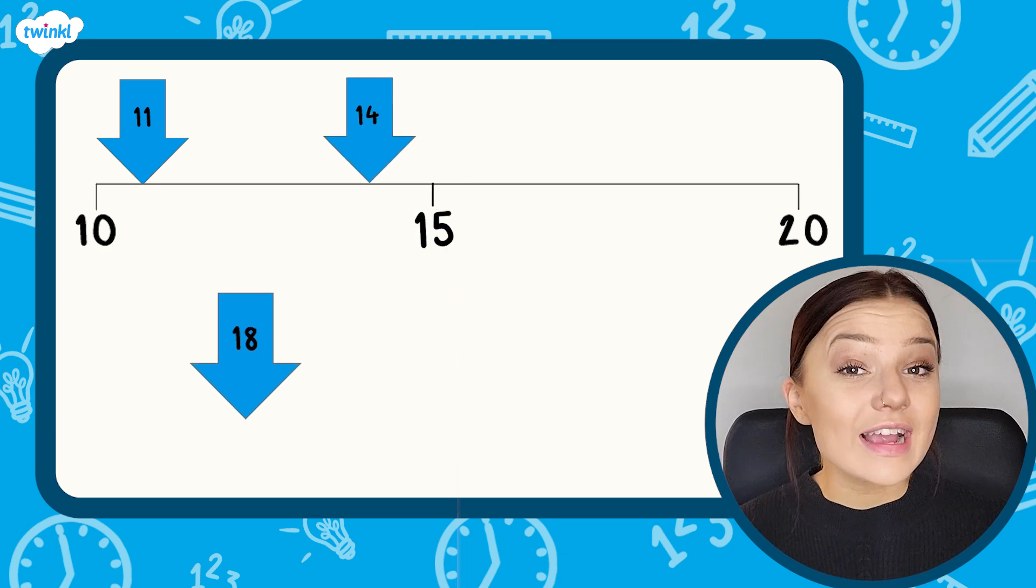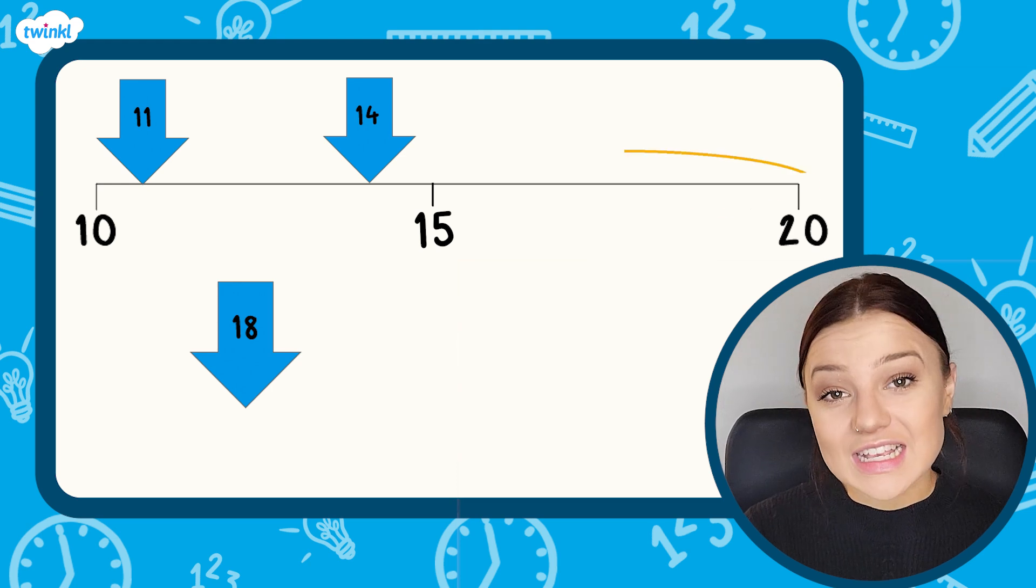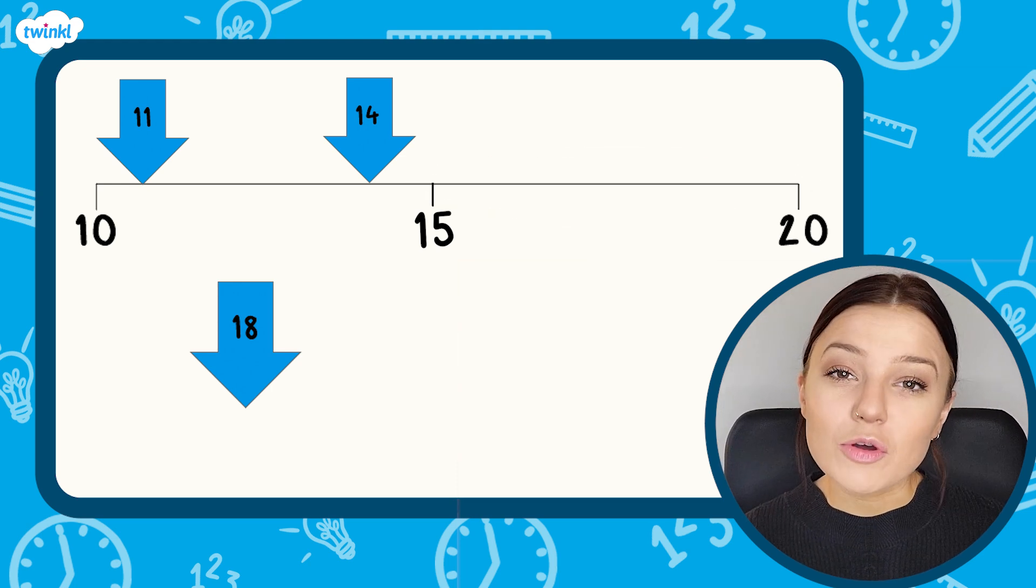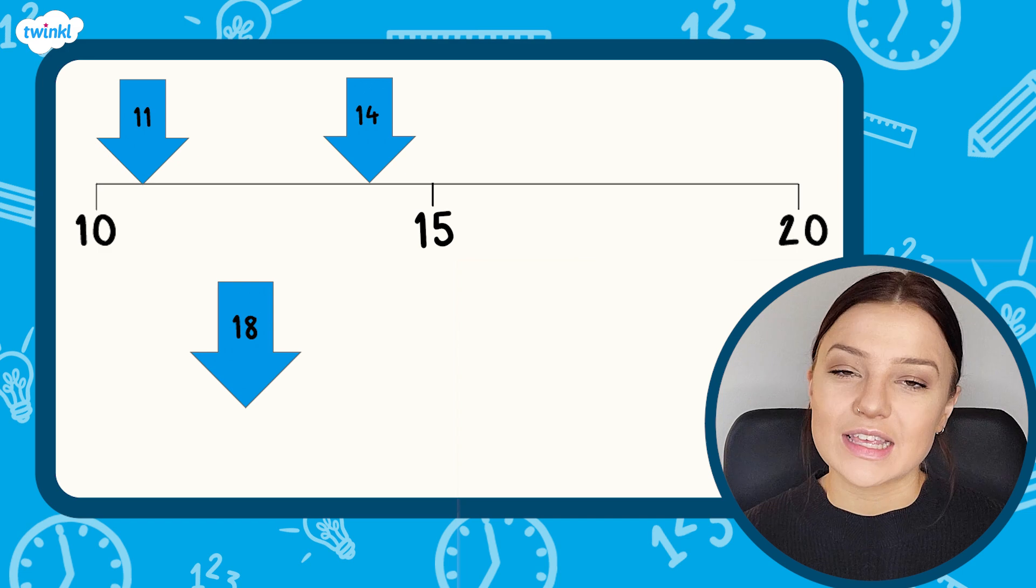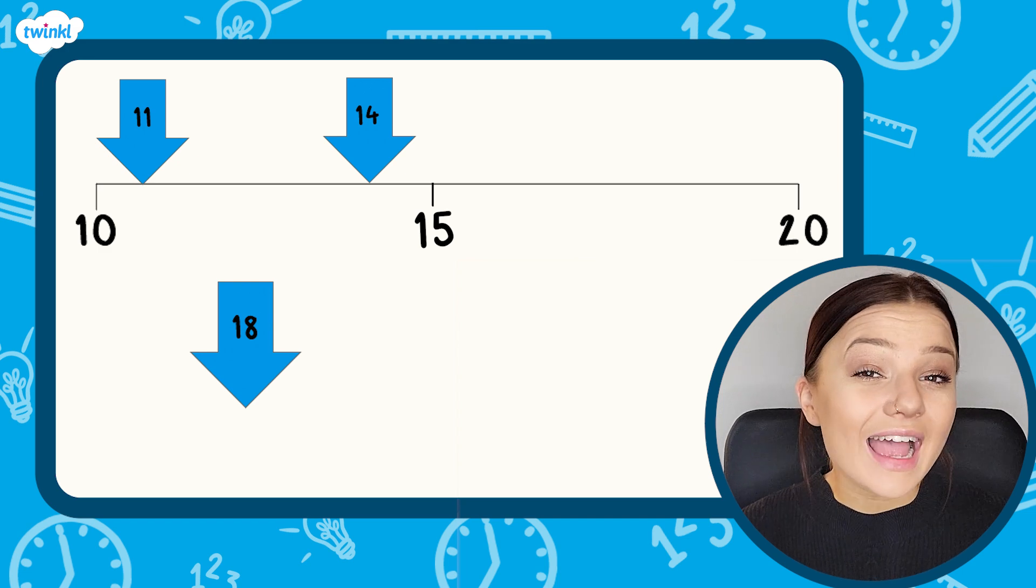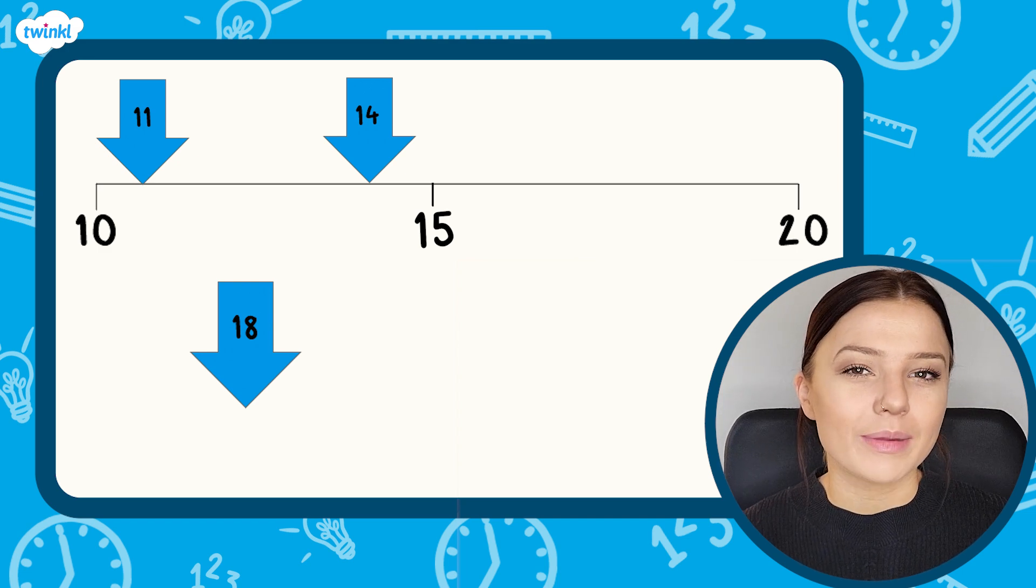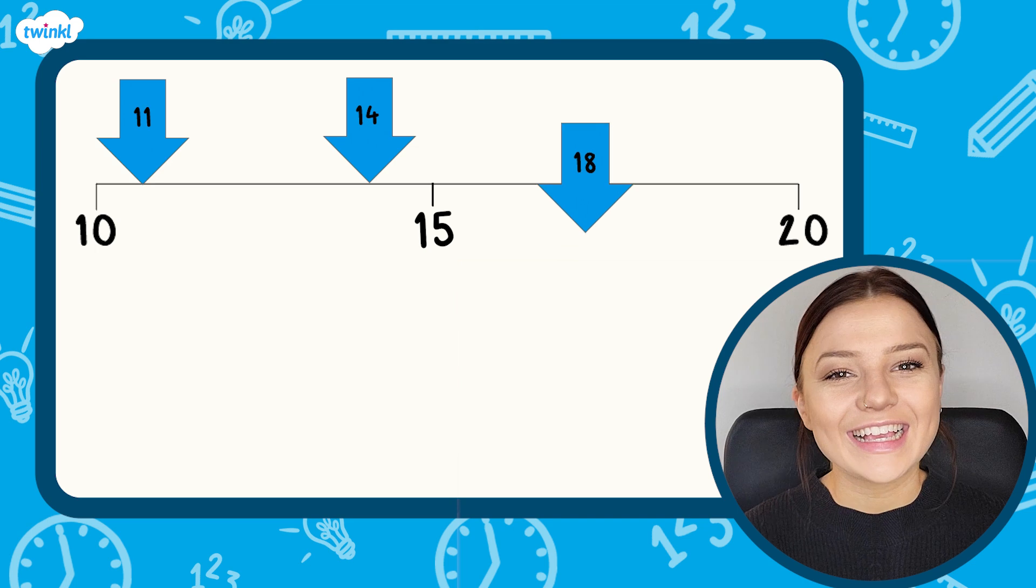And 18 is greater than 15 so it will be on this side of the number line. 18 is 3 more than 15 but 2 less than 20 so it will be slightly closer to 20 on the number line which is approximately here.